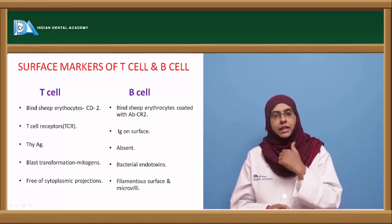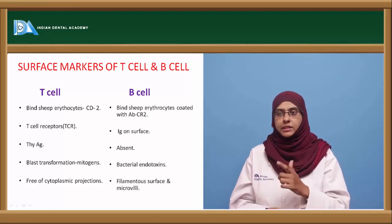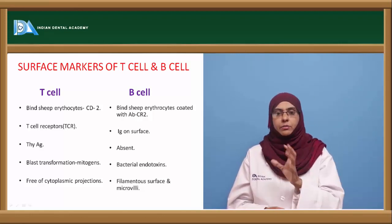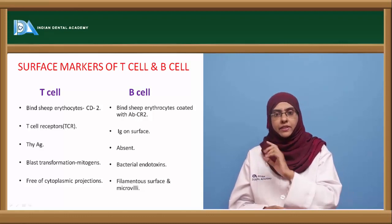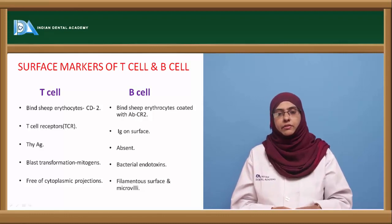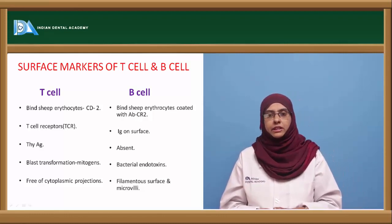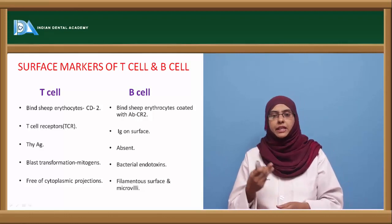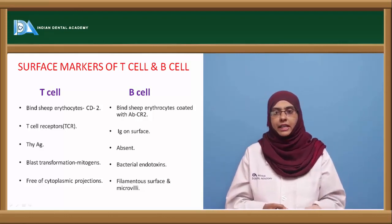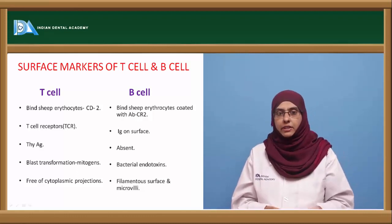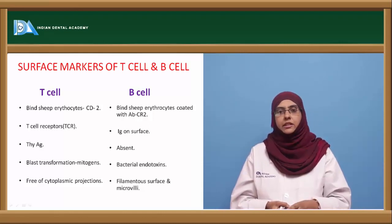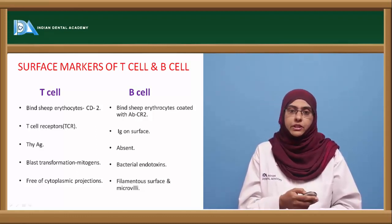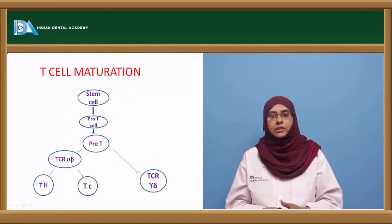T cells carry a specific surface antigen called the THY antigen, absent in B cells. T cells also express a TCR, whereas B cells carry surface immunoglobulin receptors. Blast transformation in T cells is induced by mitogens such as concanavalin A, whereas in B cells it is induced by bacterial endotoxins. T cells are free of cytoplasmic projections, while B cells have filamentous surface and microvilli, which help to distinguish the two cell types.